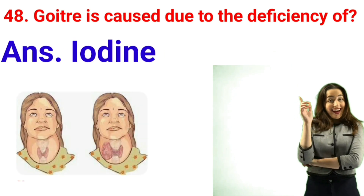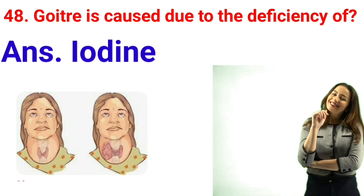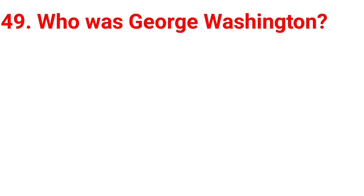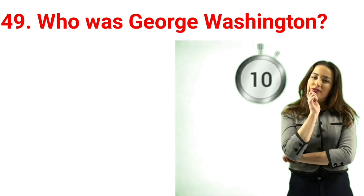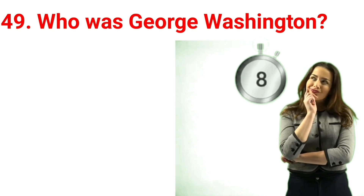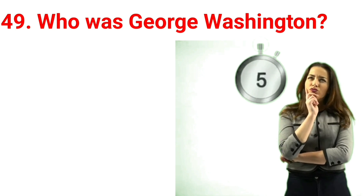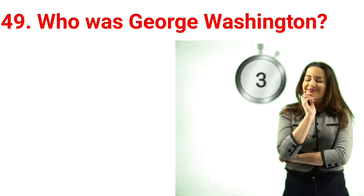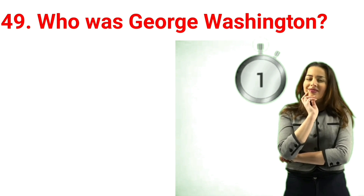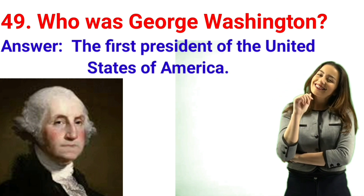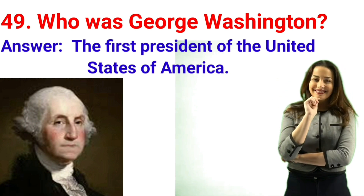Goiter is caused due to deficiency of? Answer is Iodine. Who was George Washington? Answer is the first president of the United States of America.